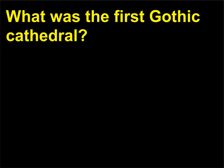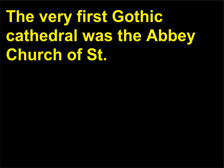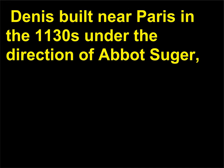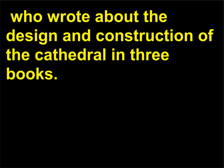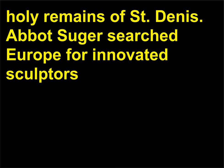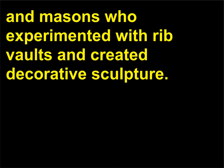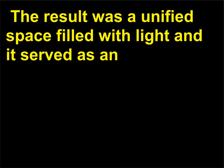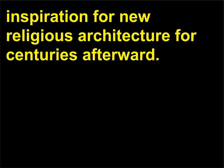What was the first Gothic cathedral? The very first Gothic cathedral was the Abbey Church of St. Denis, built near Paris in the 1130s under the direction of Abbot Suger, who wrote about the design and construction of the cathedral in three books. The plan was to reconstruct the old Benedictine monastery that housed the holy remains of St. Denis. Abbot Suger searched Europe for innovative sculptors and masons who experimented with rib vaults and created decorative sculpture. The result was a unified space filled with light, and it served as an inspiration for new religious architecture for centuries afterward.